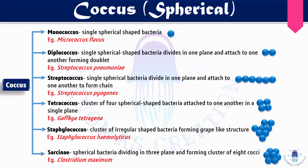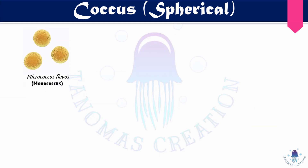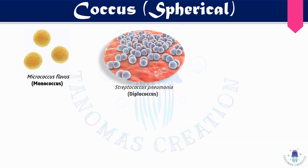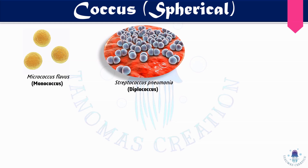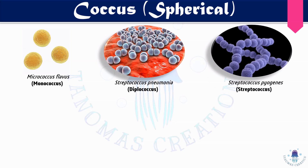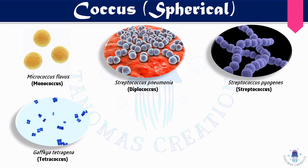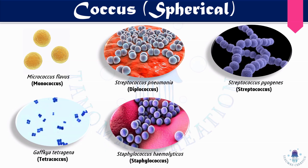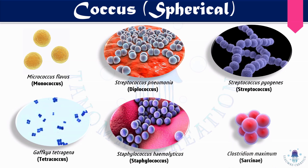The sixth coccus category is sarcina — a cluster of eight cocci attached together. Examples: monococcus — Micrococcus flavus; diplococcus — Streptococcus pneumoniae; streptococcus group — Streptococcus pyogenes (note: not all streptococcus genera fall under this group); tetracoccus — Gaffkya tetragena, four cocci attached together; staphylococcus — Staphylococcus haemolyticus, grape-like clusters; sarcina — eight cocci attached to one another.